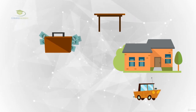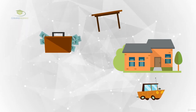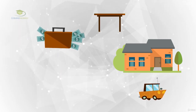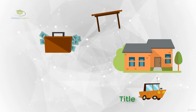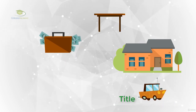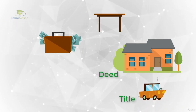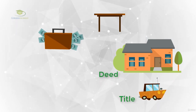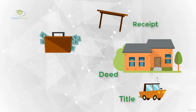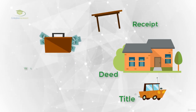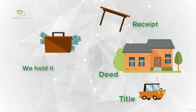But how do we know that we own them? For the car we have a title. For the house we have a deed. For the equipment we have a receipt. For the cash we simply hold it.